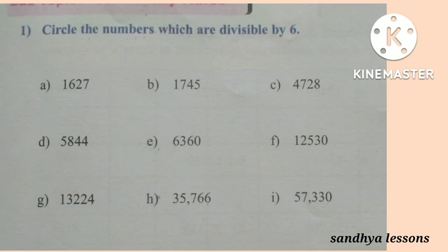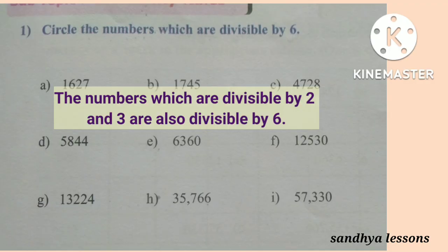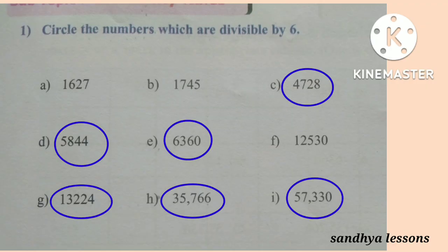First Roman: Circle the numbers which are divisible by 6. Divisibility rule of 6 is: the numbers which are divisible by both 2 and 3 are also divisible by 6. The numbers divisible by 6 are 4,728; 5,844; 6,360; 13,224; 35,766; and 57,330.